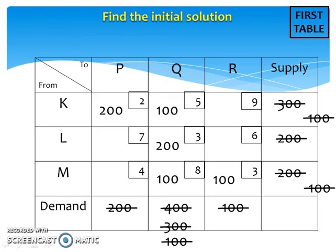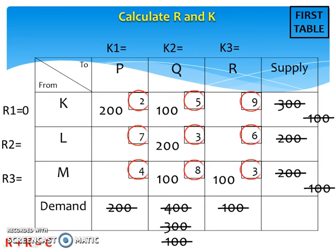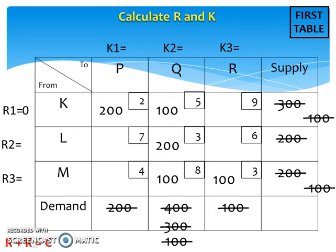The first thing to do in finding the optimal solution is to calculate R and K. R's are values for the rows while K's are values for the columns. We need to calculate all R's and K's. R1 must be set equal to 0, and R and K values are calculated using the formula R plus K equals C, where C is the transportation cost. Please bear in mind that this formula is only applied to U squares, so we need to look only at U squares.